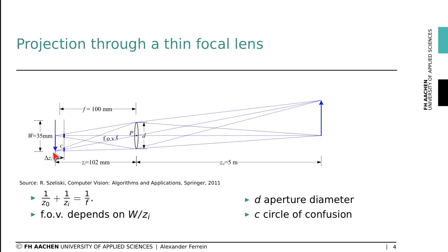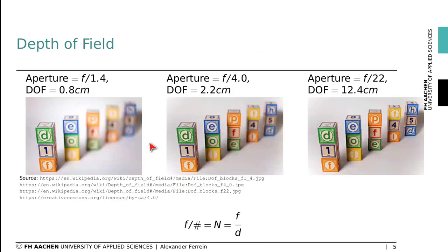The circle of confusion, shown with a small length c, represents blur. Its diameter depends on the aperture d, which defines how much light falls onto the sensor plane. This is called the depth of field. With a large aperture, the depth range in which objects are projected sharply is very narrow, while with a small aperture the depth of field is larger, and can be derived with the intercept theory.